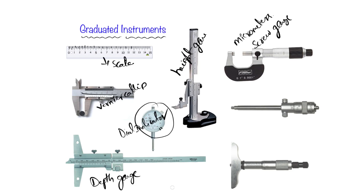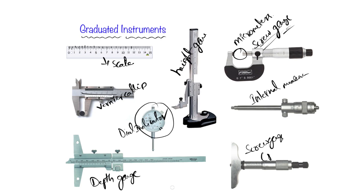This is a micrometer screw gauge — you can call it simply a micrometer or screw gauge. It uses a screw principle, which is why it is called a screw gauge. This variant is used to measure hole diameters, so it is for internal measurements, while the standard one is for external measurements. There is also a screw gauge for depth measurements.